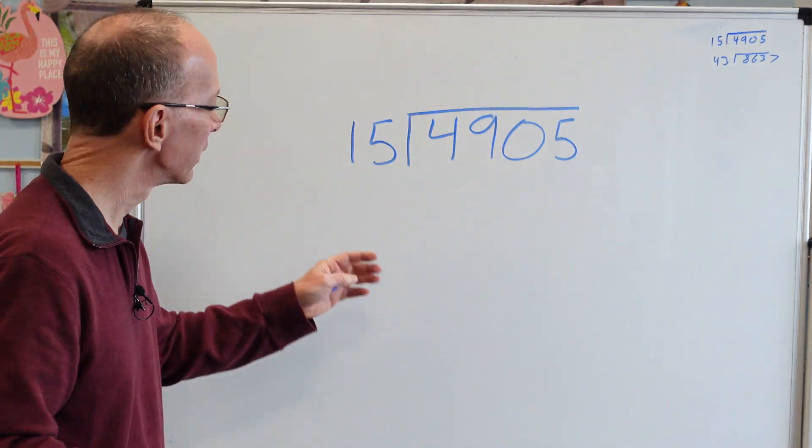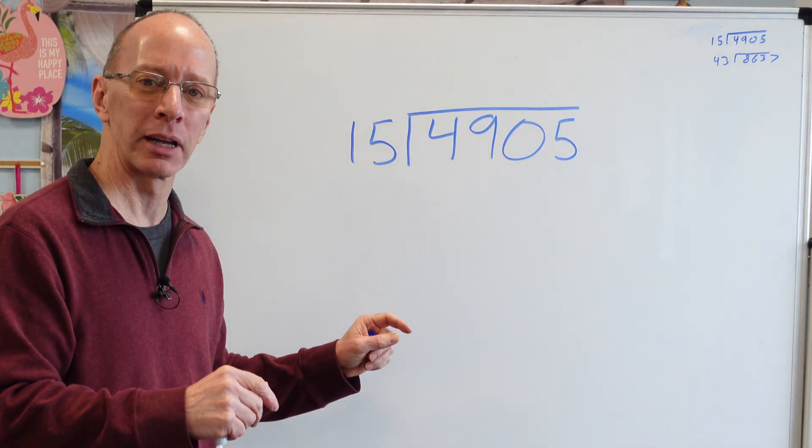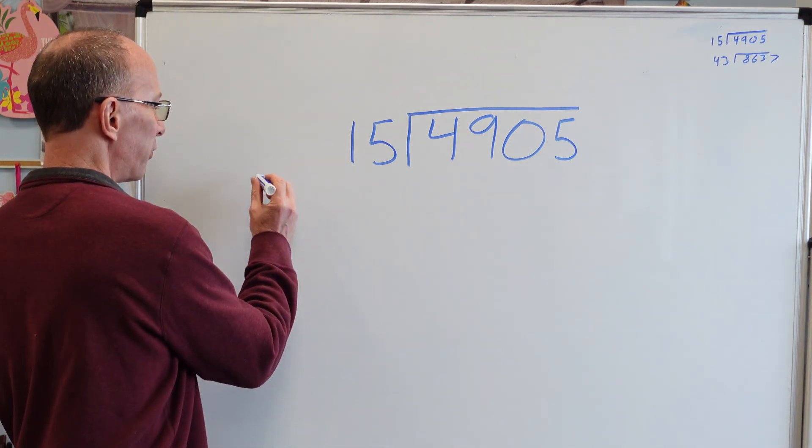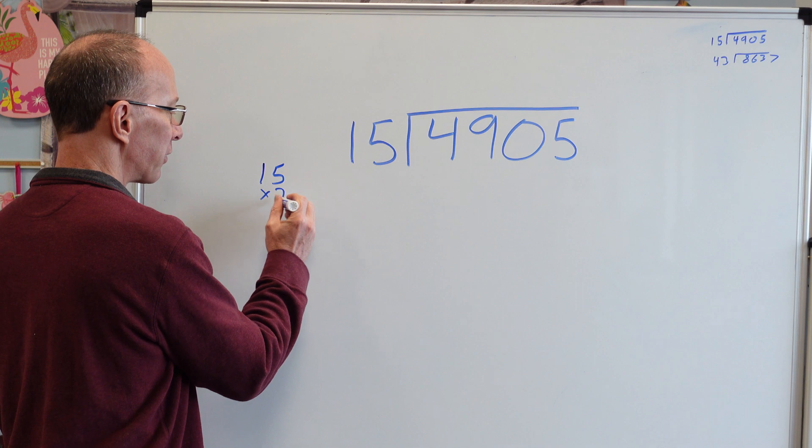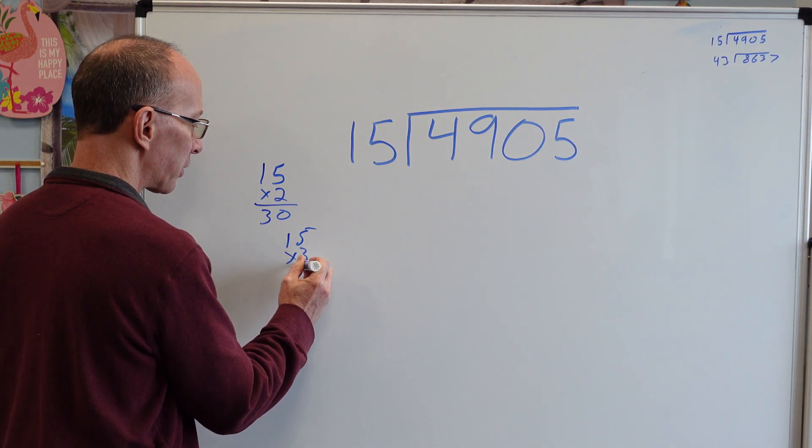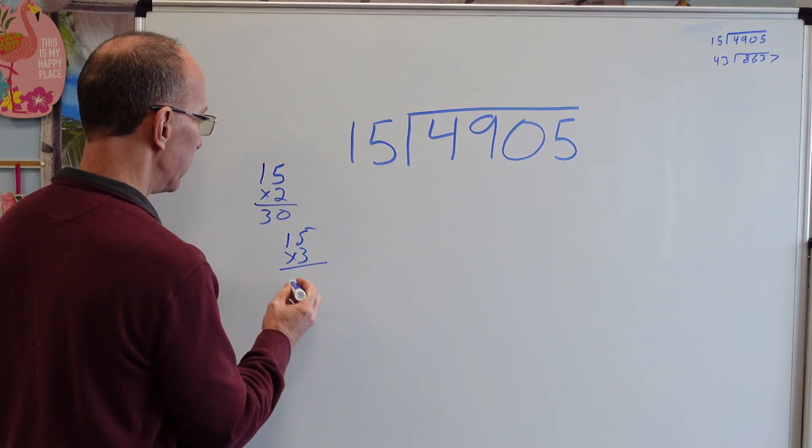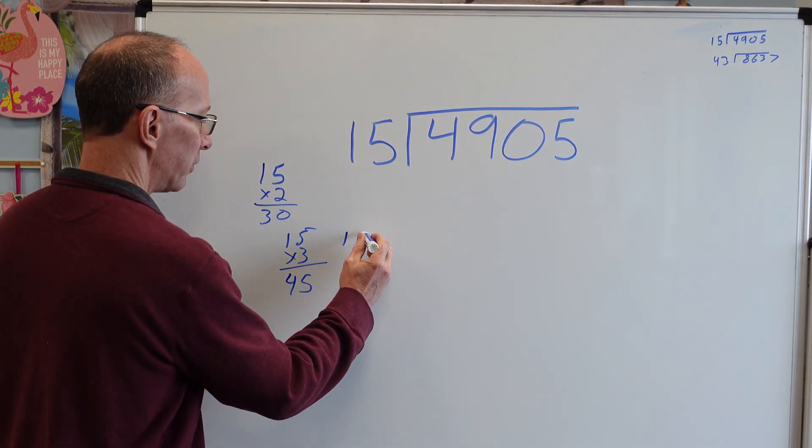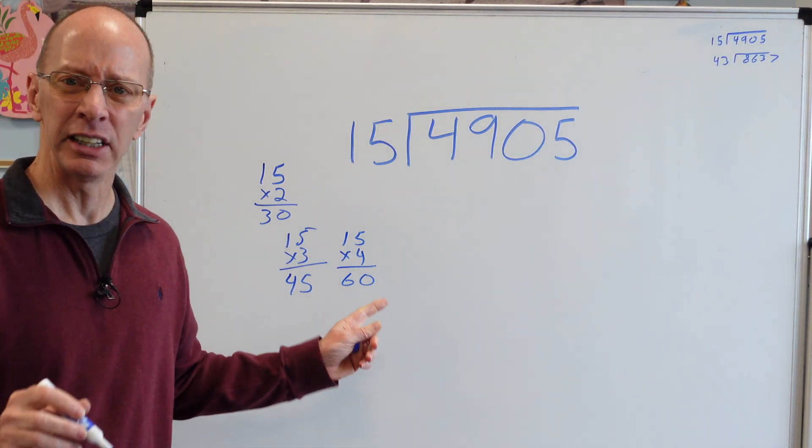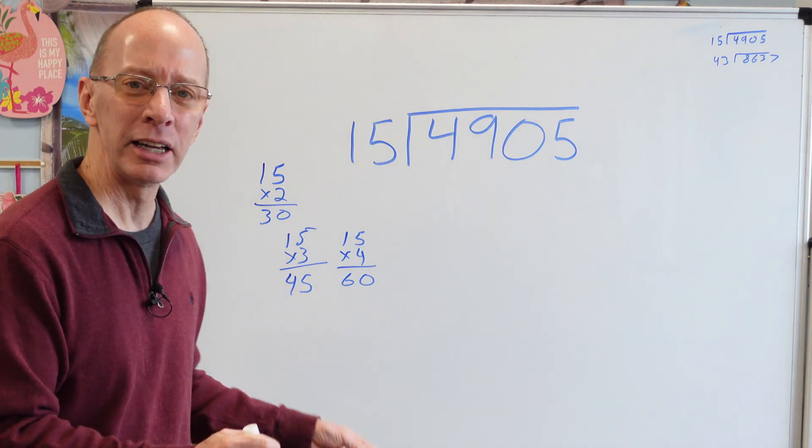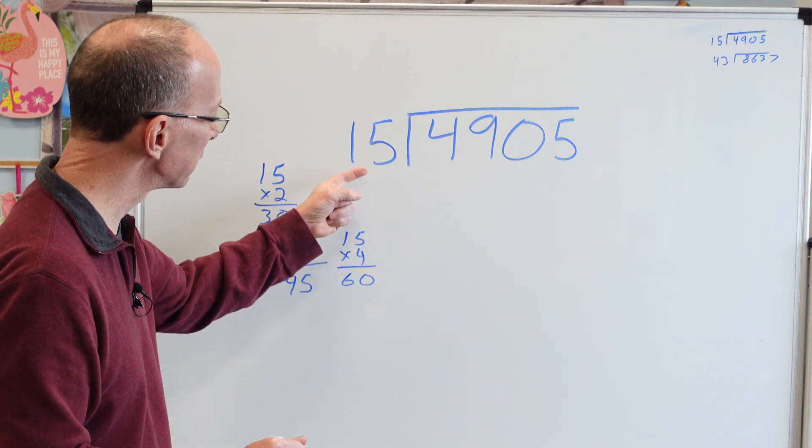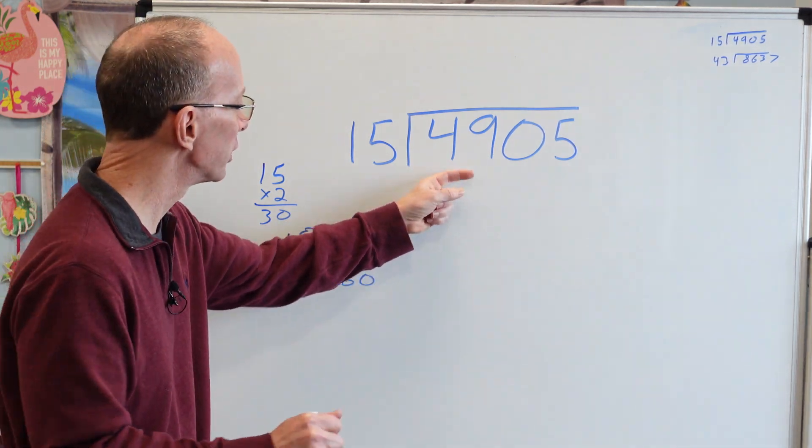All right. 15. Now, 15s I did not learn how to multiply. I learned how to multiply all the way to 12s, but not 15. So if you need to do a little figuring on this side right here, you can start to put like 15 times 2 would be 30. And then 15 times 3 would be 45. And then 15 times 4 would be 60. If you need to do more of those, that's okay. It just makes your job easier when you go to divide this number.